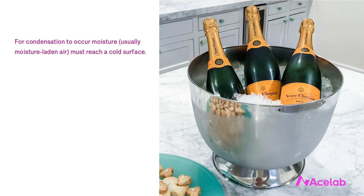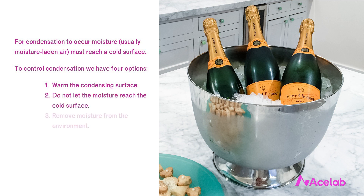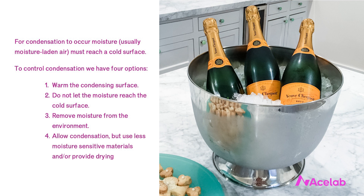For condensation to occur, moisture — usually moisture-laden air — must reach a cold surface. No cold surface, no condensation. To control condensation in buildings, we have four options: one, warm the condensing surface, preventing the problem from occurring by not having anything cold; two, prevent moisture from reaching the cold surface; three, remove moisture from the environment, perhaps by dehumidifying; and four, allow condensation to occur but make it so it doesn't present a problem, either by using materials that aren't moisture-sensitive or by providing drying.